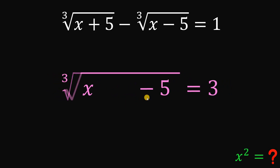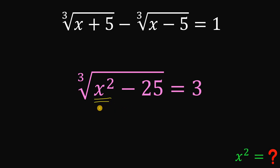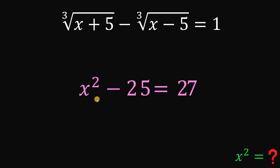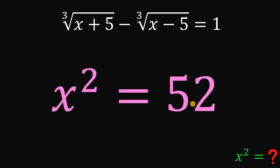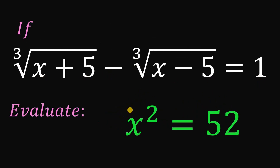So cube root of (x squared minus 25) equals 3. We now have x squared in our equation, which is what we want to find. To undo the cube root, we cube both sides: x squared minus 25 equals 27. Adding 25 to both sides gives x squared equals 27 plus 25, which is 52. Therefore, if cube root of (x plus 5) minus cube root of (x minus 5) equals 1, then the value of x squared must equal 52.